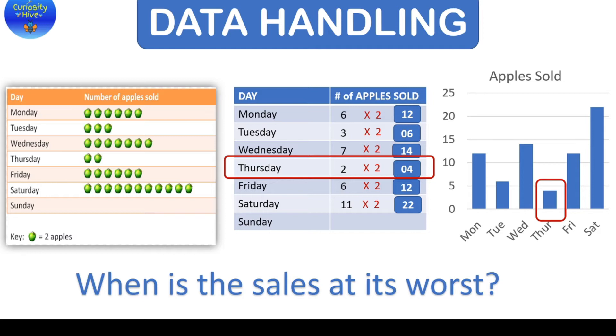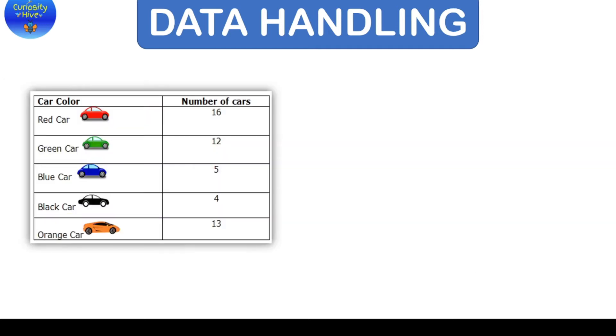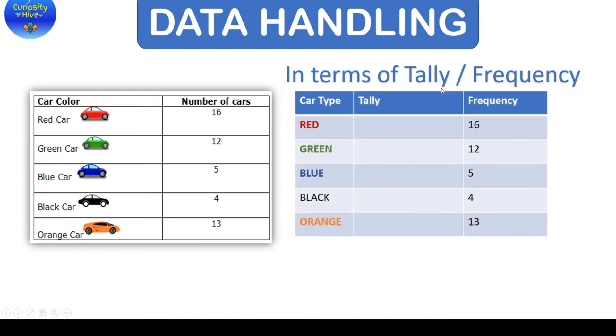Now after this, let's look at another form of data handling where this information in tabular form can also be represented in form of tally or frequency. Now frequency is nothing but the number of times the item has occurred. For example, the red car, the number of cars is 16. So we say the frequency of red car is 16. So on and so forth. But there will be times where you will be given the car type and just the tally and you have to find the frequency.